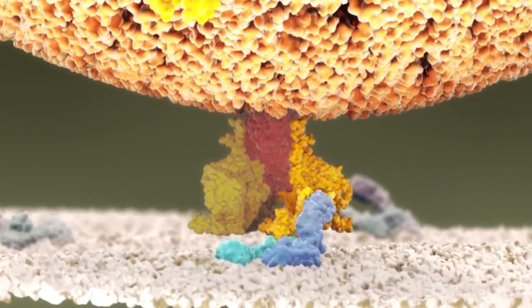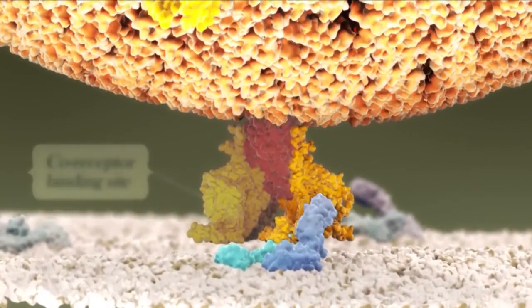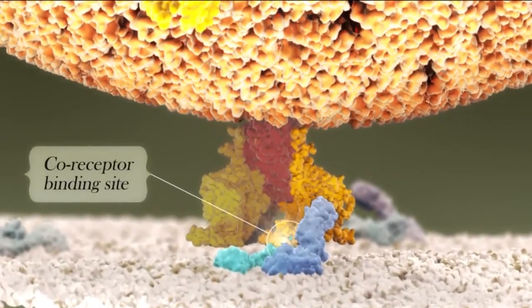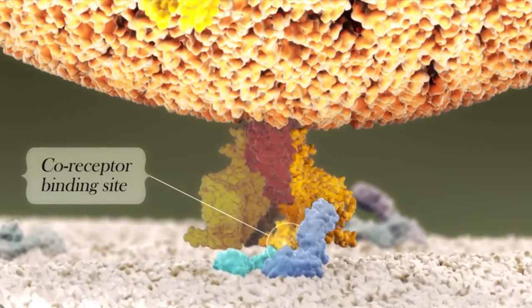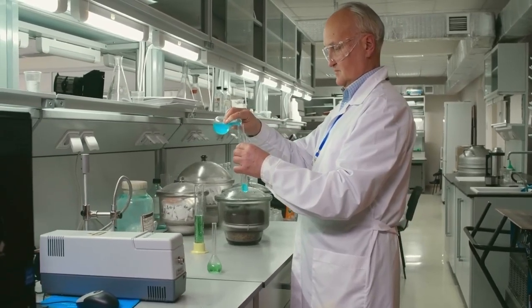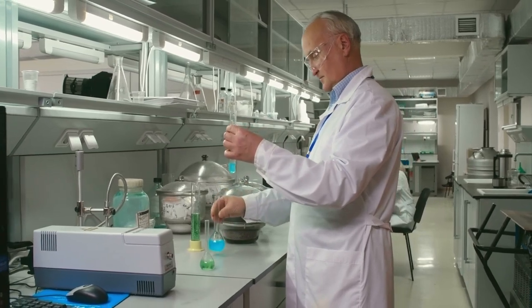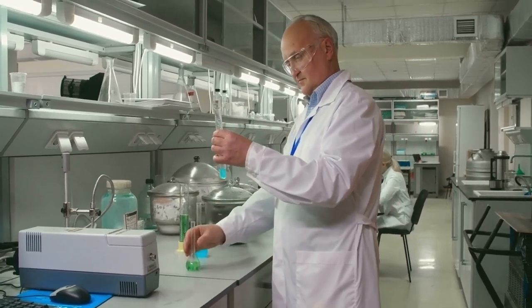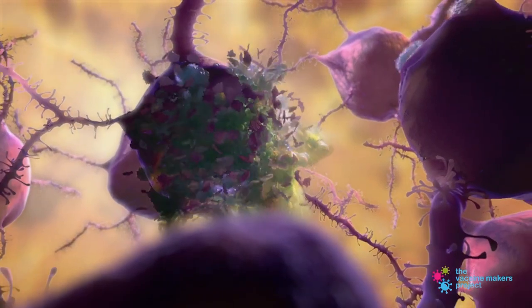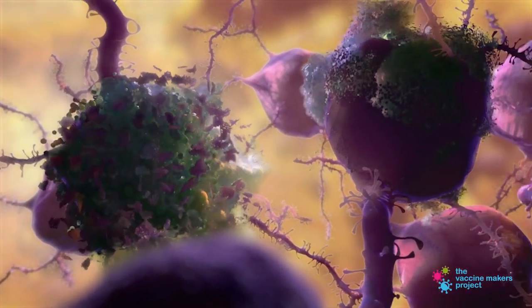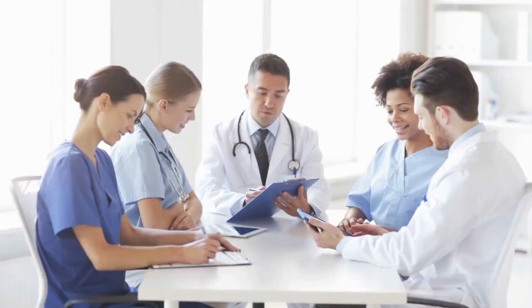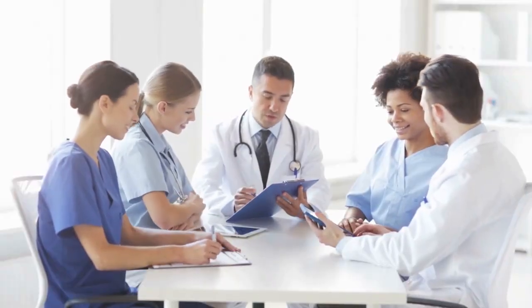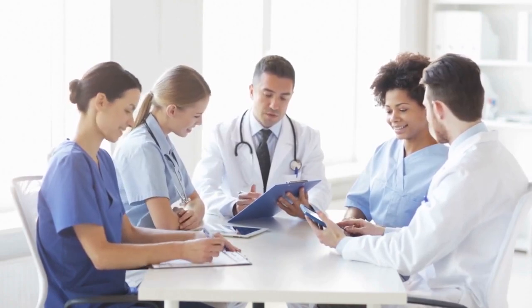The interaction between the virus and the CD4 receptor triggers the opening of the envelope structure, exposing a vital site essential for infection. Understanding this complicated process has led researchers to identify a potential target for intervention: an antibody capable of keeping the virus's envelope structure closed, thereby preventing infection. This discovery marks a significant step towards the development of an HIV vaccine.